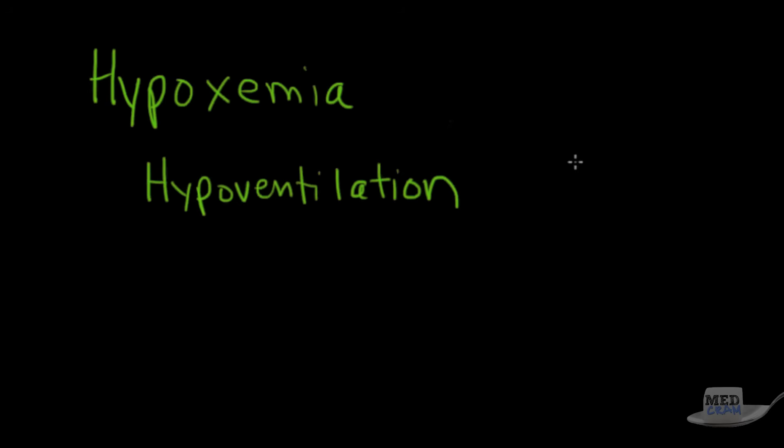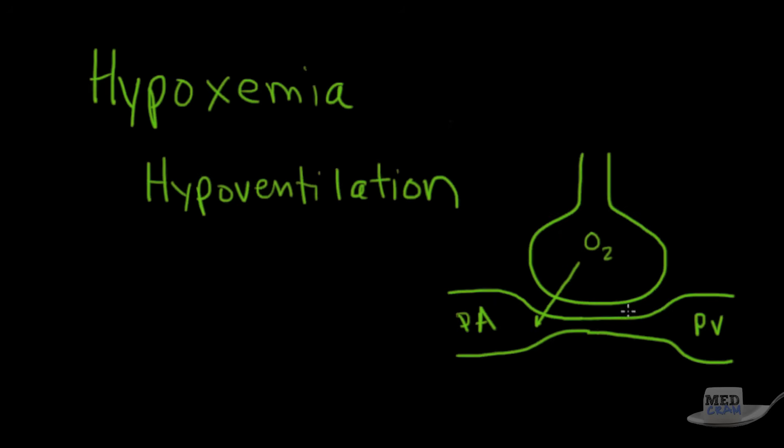So again let's go back to our alveolus which we showed here and our pulmonary vein, pulmonary artery system. This is the pulmonary artery which is deoxygenated and this is the pulmonary vein which becomes oxygenated. And you recall that we've got oxygen which goes in and carbon dioxide which comes out.